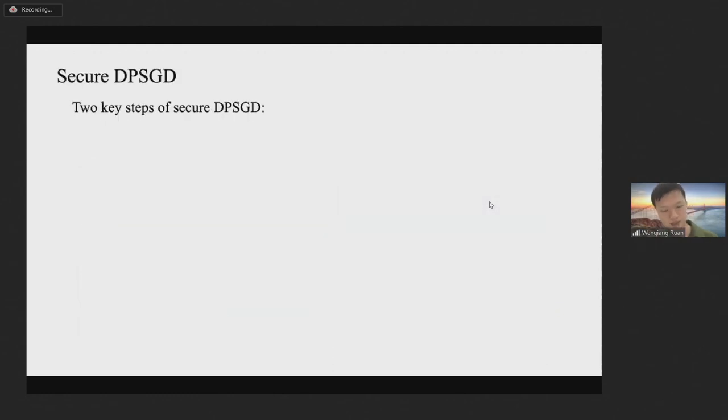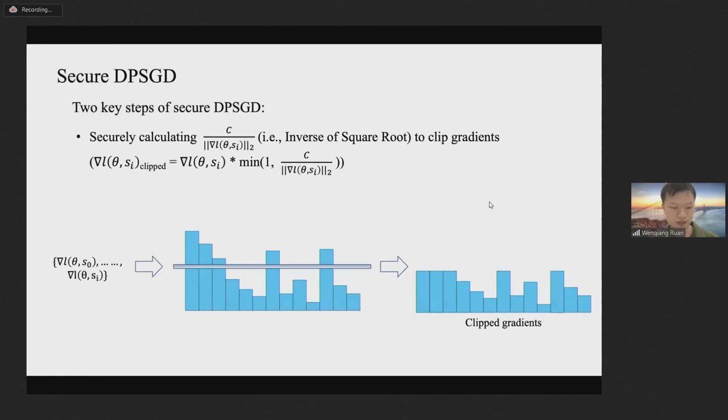Before presenting our secure DPSGD protocol, I first introduce two key steps of the DPSGD algorithm. It has two extra steps compared with regular SGD. Firstly, DPSGD clips gradients to ensure that the L2 norms of all gradients are smaller than a constant C. Concretely, we need to securely divide C by the L2 norm of each gradient and compare the calculation results with one to decide the clipping results. Secondly, DPSGD adds random noise sampled from a given Gaussian distribution to perturb gradients.